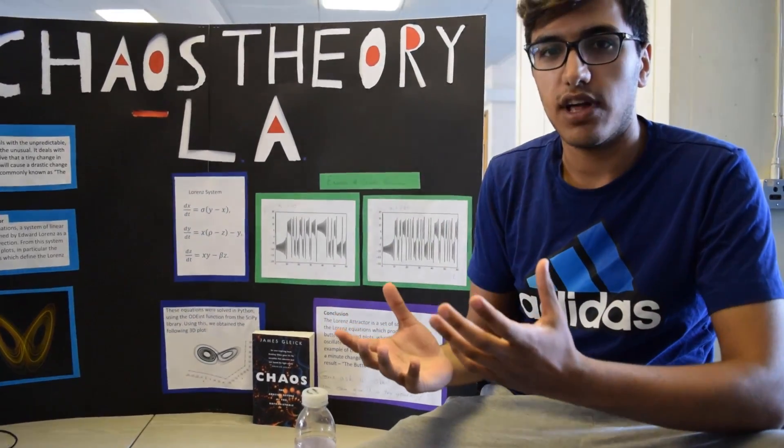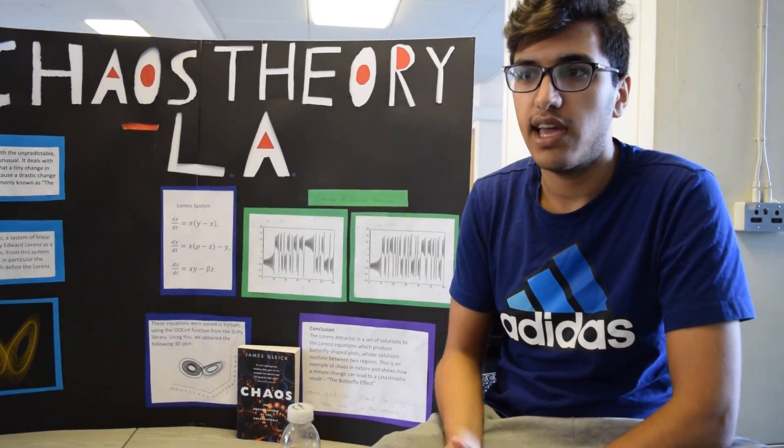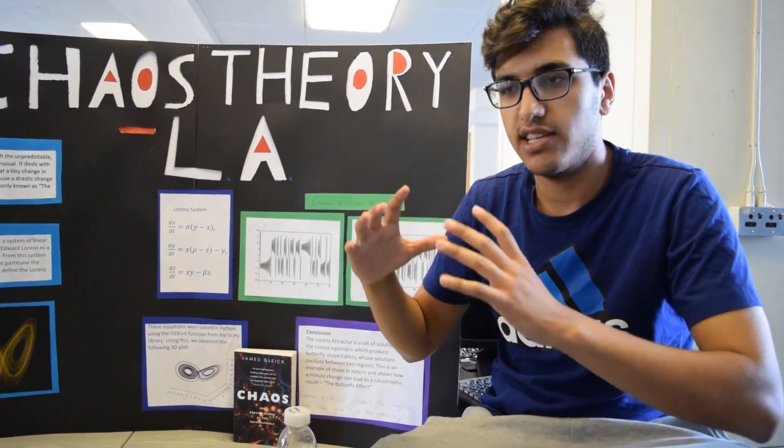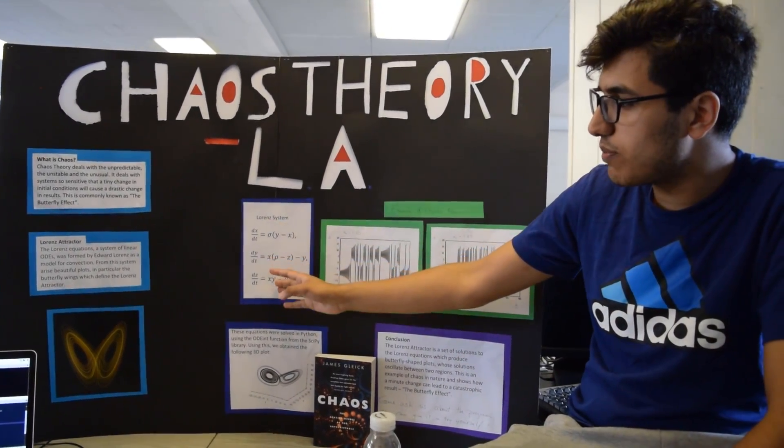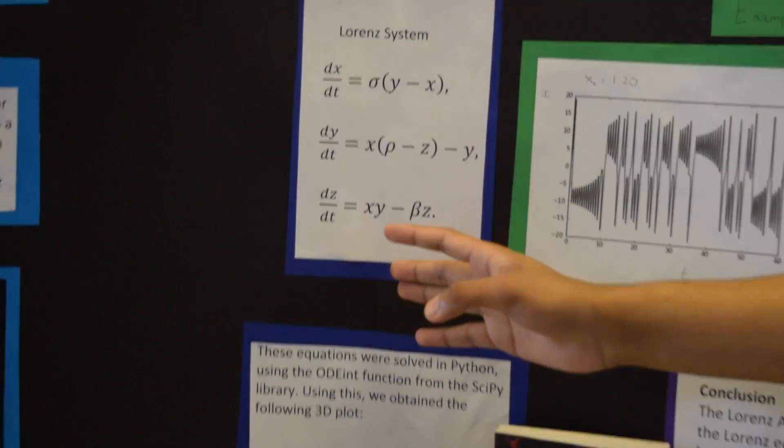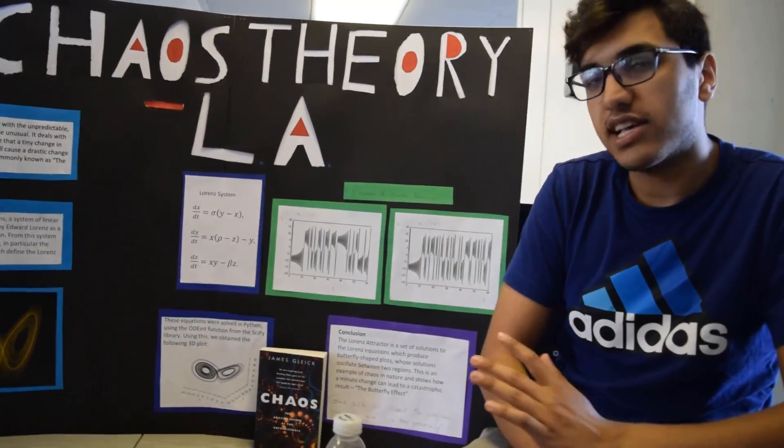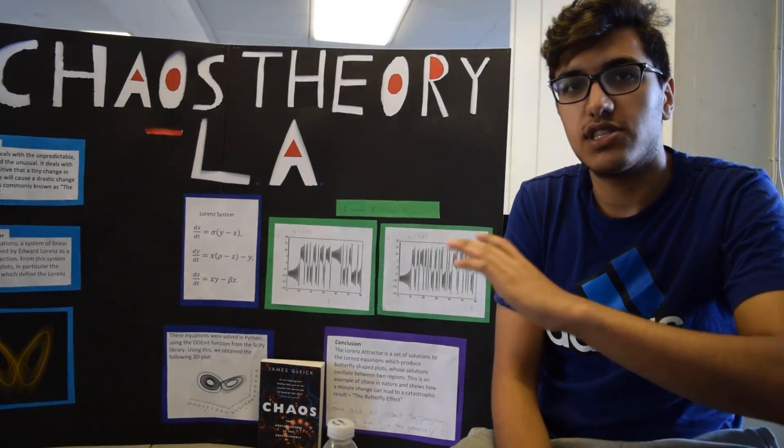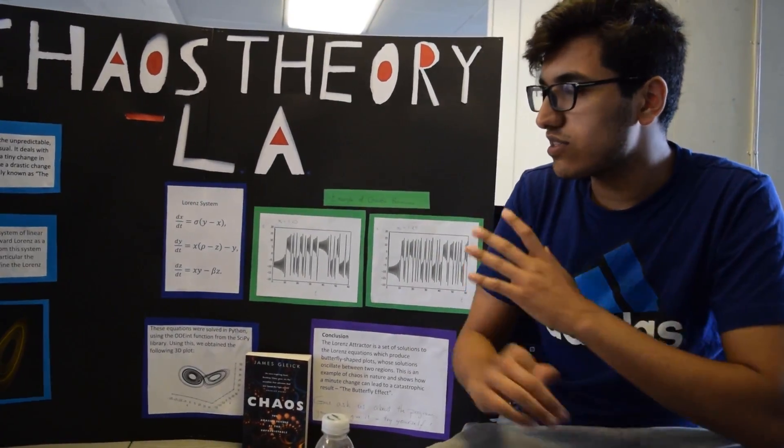This is commonly known as the butterfly effect, and the analogy is given that if a butterfly flaps its wings, it can create a tornado somewhere else in the world. The Lorenz Attractor deals with this coupled system of differential equations. Lorenz himself derived these from this massive equation and used a bunch of simplifications and got these three simple equations in the end.